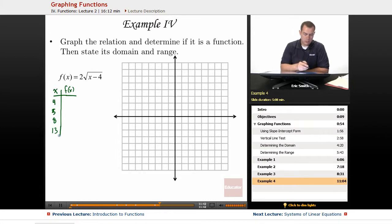So if I was to use, say, 4, I would end up with 2 times the square root of 4 minus 4, or 2 times the square root of 0, which is 0. So that's one point I know is on my graph, so at 4, 0.